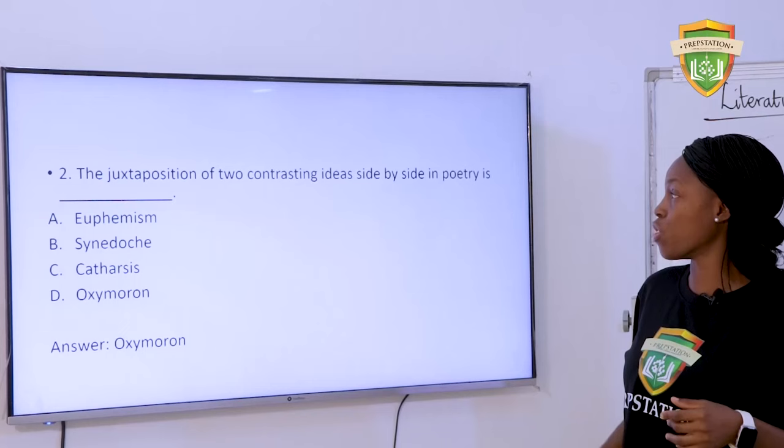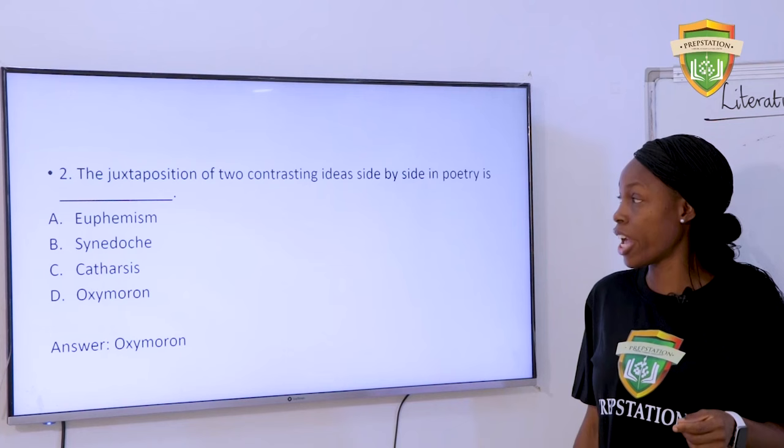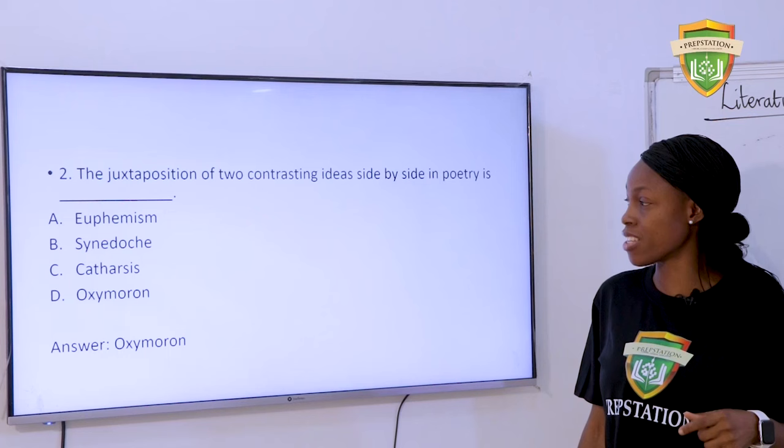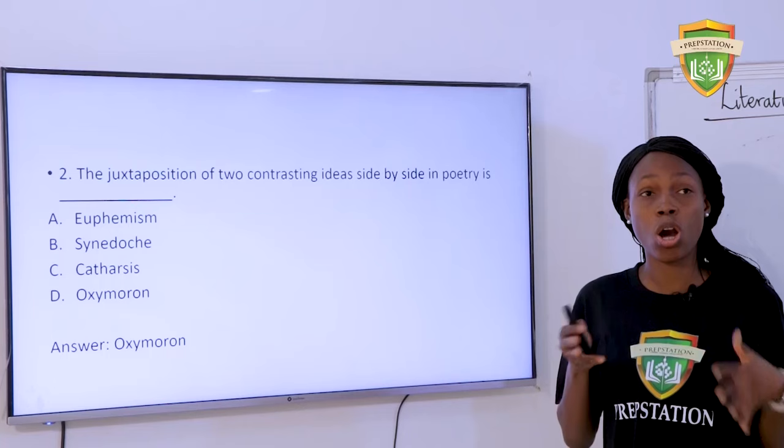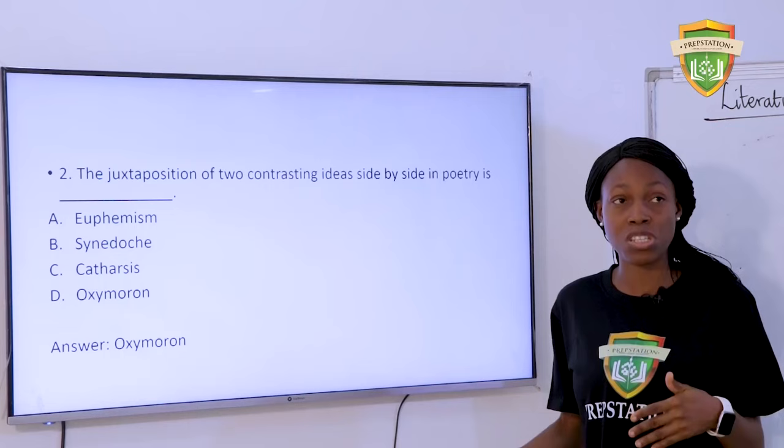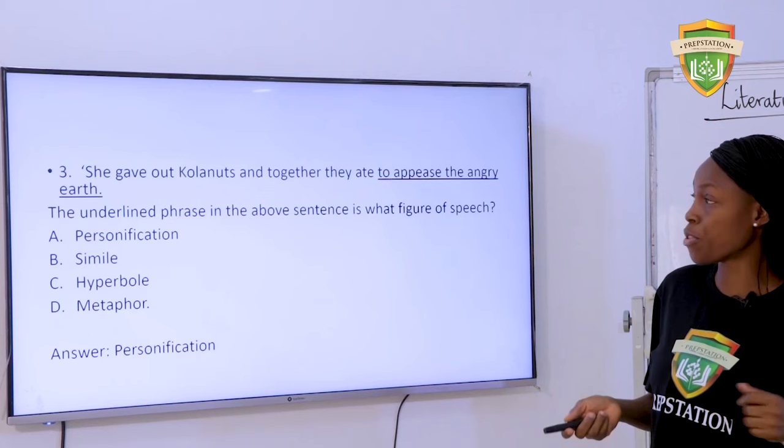Question 2: The juxtaposition of two contrasting ideas side by side in poetry is — A. Euphemism. B. Synecdoche. C. Catechism. D. Oxymoron. The answer is oxymoron. When you have two opposite words or ideas side by side, it's an oxymoron. For example, 'bittersweet' or 'it's no longer an open secret' and things like that.